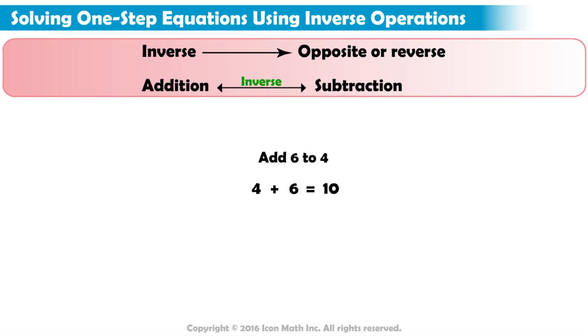Now, let's undo the addition of 6 by subtracting 6. 10 minus 6 equals 4. Notice, 4 is the number we started with.